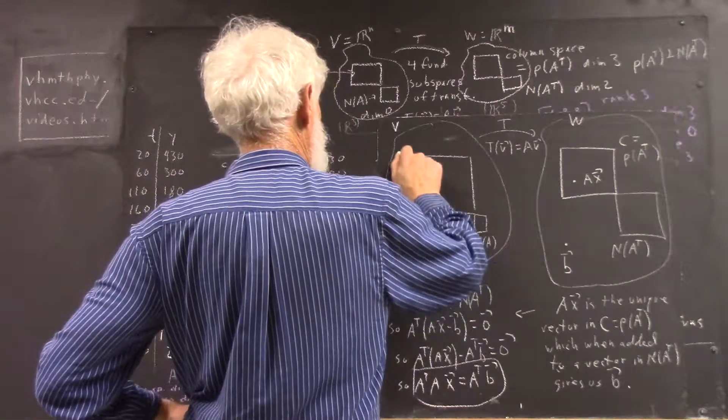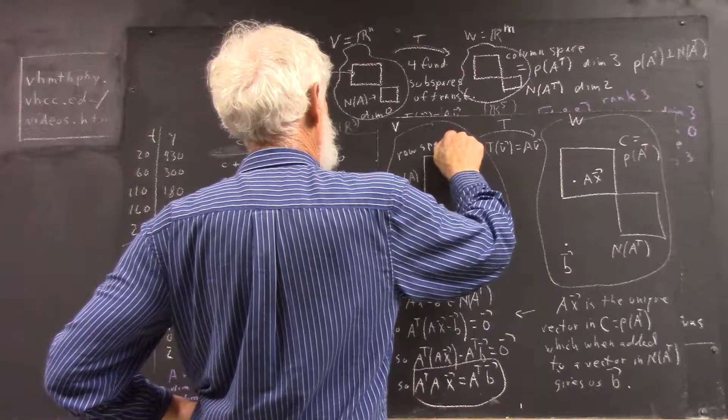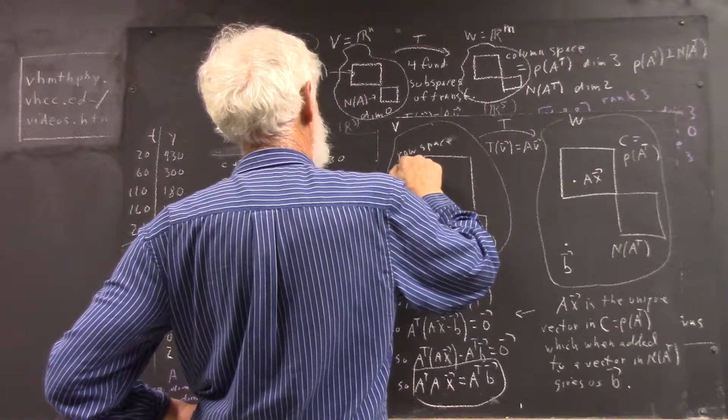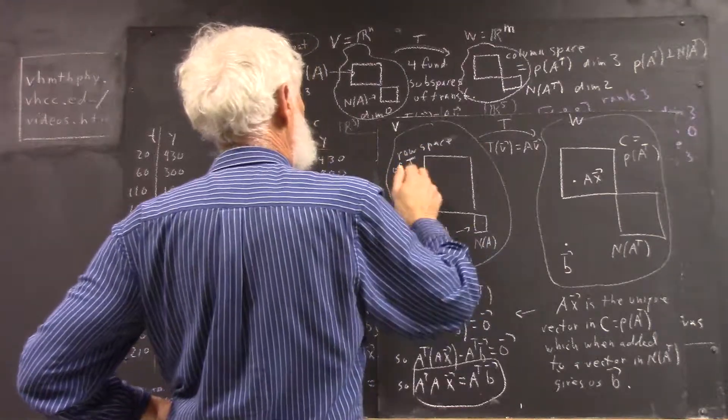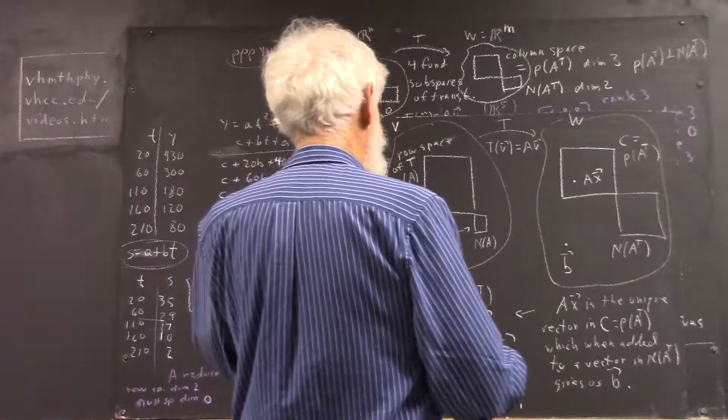This is the row space of the transformation. It's also the row space of A. This is the column space.